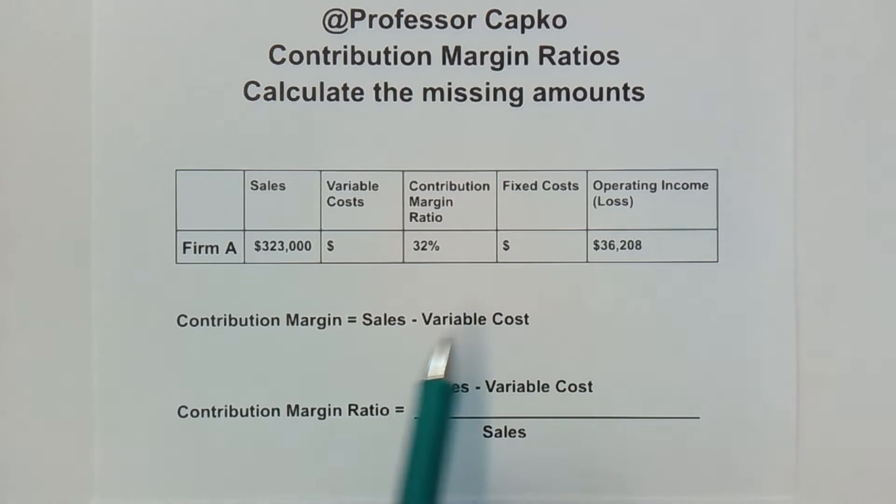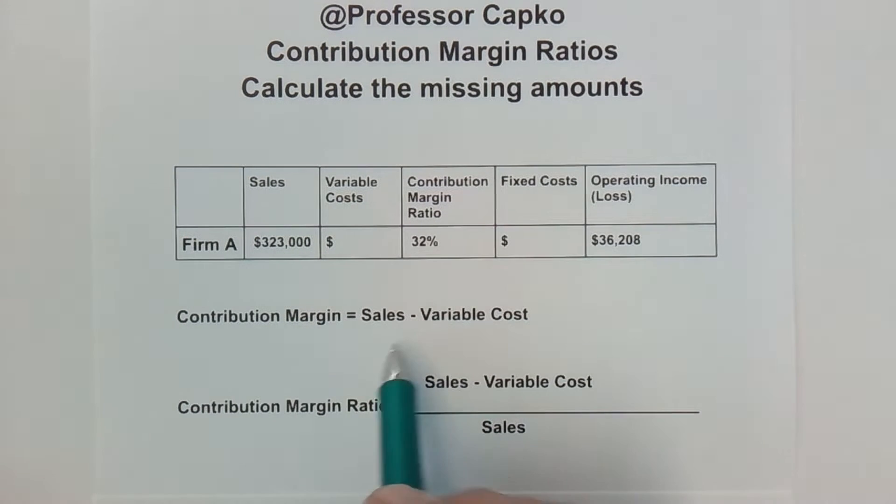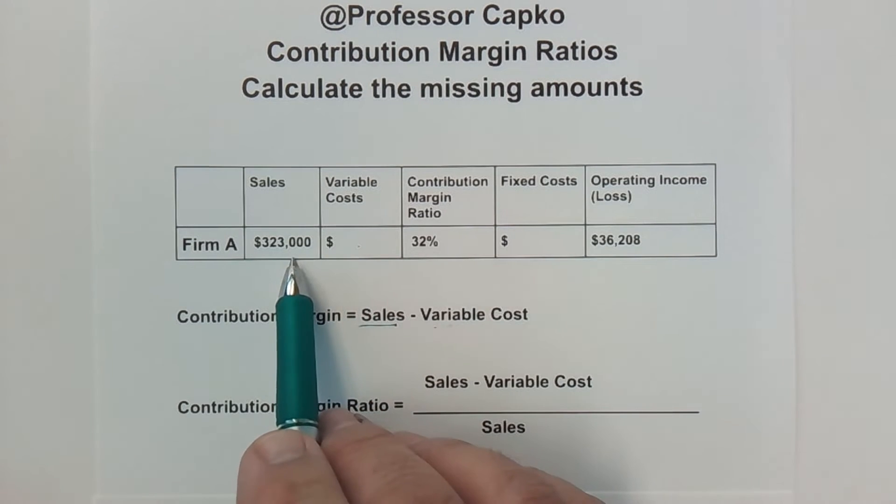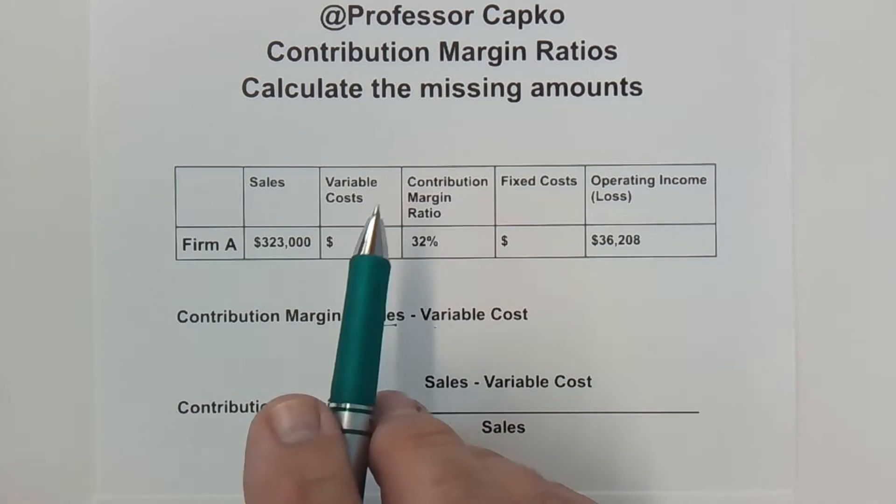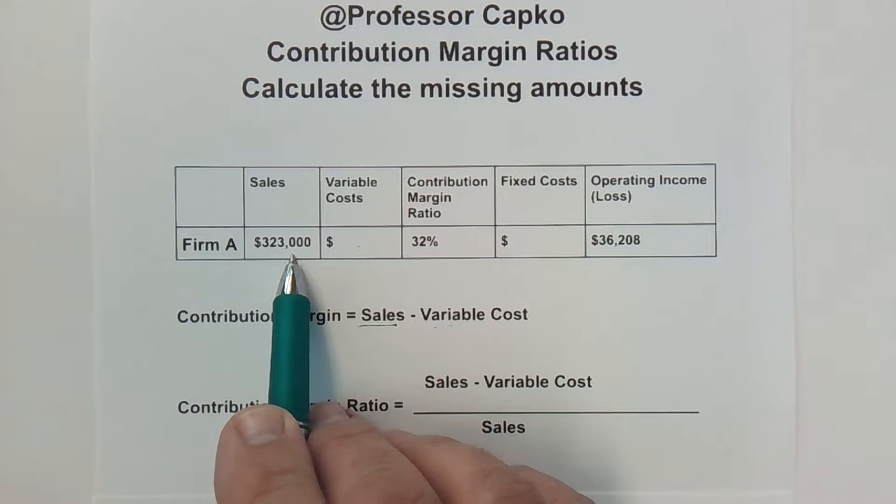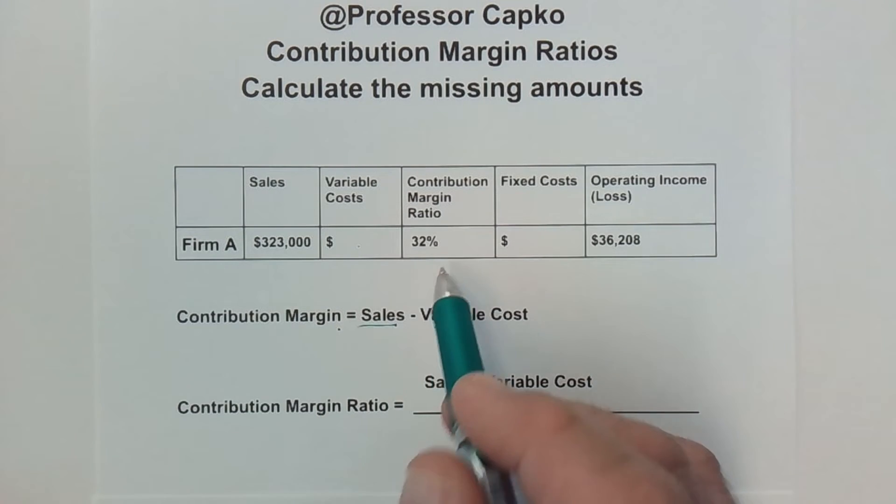Once you subtract out the fixed costs from the contribution margin, that's going to give you your operating income. And of course, if your costs are higher than your contribution margin, you would have a loss. And the convention in accounting would be to have a negative number put in parentheses like that. So if you see parentheses in accounting, know that that means it's a negative number, which in business is not a good thing. Let's go over these formulas. We have contribution margin. That's the sales minus the variable costs. Here, though, we don't have contribution margin. We have contribution margin ratio.